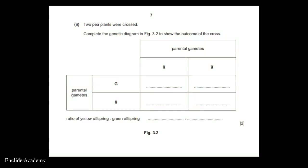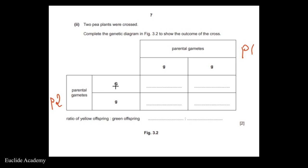Two pea plants were crossed. We need to complete the genetic diagram in Figure 3.2 to show the outcome of the cross. A genetic diagram can be used to predict the genotype or phenotype of offspring. Parent one has two recessive alleles (gg) and parent two is heterozygous (Gg). Parent one is green in color, and since parent two has the dominant G for yellow, parent two is yellow.